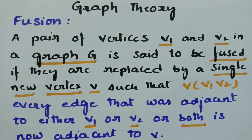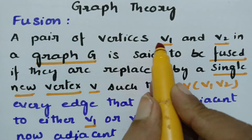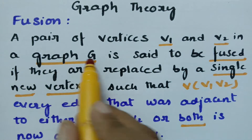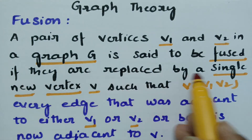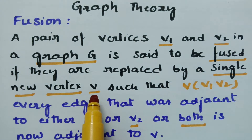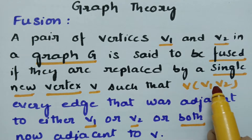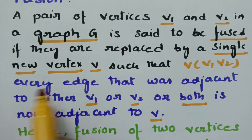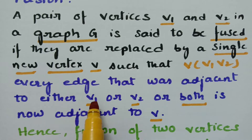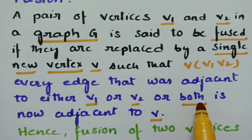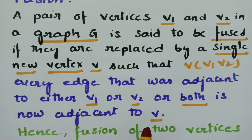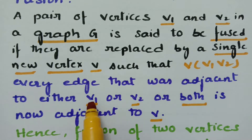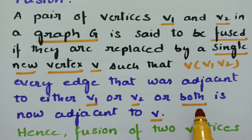This video is on fusion, a topic from graph theory. Fusion in a graph may be defined as: a pair of vertices V1 and V2 in a graph G is said to be fused if they are replaced by a single new vertex V. So V1 and V2 are fused and replaced by the new vertex V. Every edge that was adjacent to either V1 or V2 or both is now adjacent to the new vertex V.